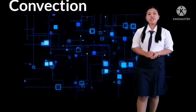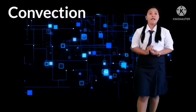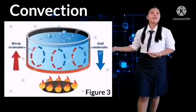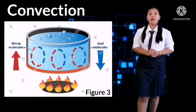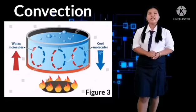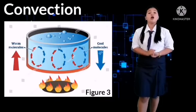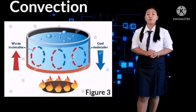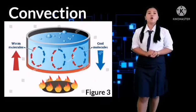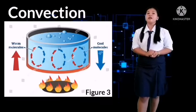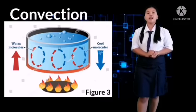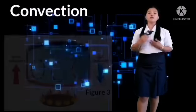Another method of heat transfer is convection, observed when heating water. As illustrated in Figure 3, the water at the bottom part of the container gets heated first. When water is heated, it begins to rise. Cold water is heavier than warm water, so as warm water rises, cold water goes down. This process repeats until all the water has the same temperature. This process is called convection.